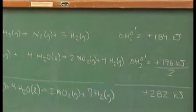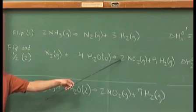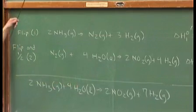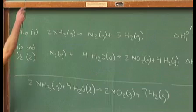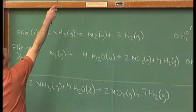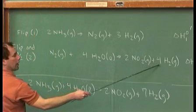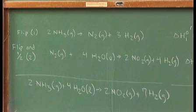For reaction number two, we wanted the NO2s on the right side as products. We wanted two moles. So we took reaction number two, we flipped it, so it'll read backwards, and we halved it. So instead of four NO2s and eight hydrogens on the left, we have two NO2s and four hydrogens on the right. The same goes for the nitrogen and the waters. They were flipped to the left side and they were halved.